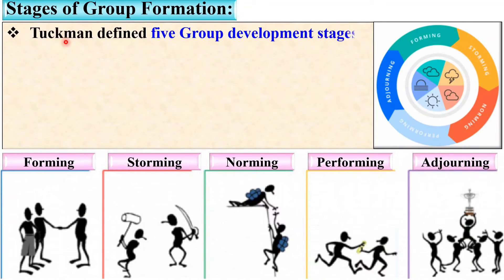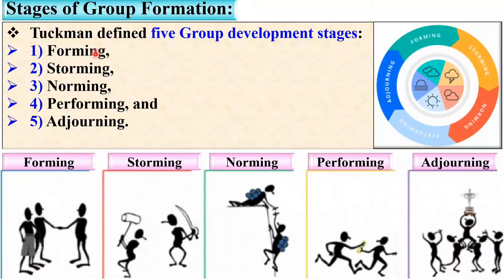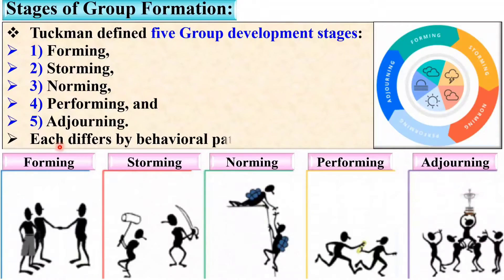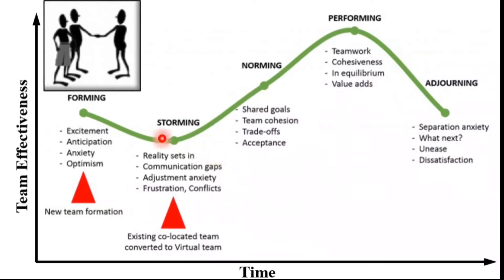Tuckman, the organizational behaviorist, defined five group development stages: forming, storming, norming, performing, and adjourning. Keep in mind these are the stages of group formation and the important and interesting point is their sequence. Each stage differs by behavioral patterns. Let us see one by one each stage briefly with the help of this chart.